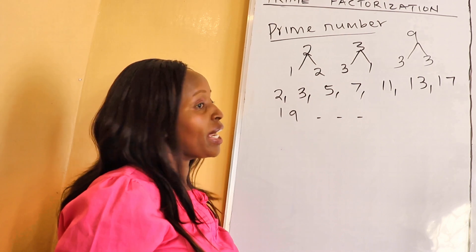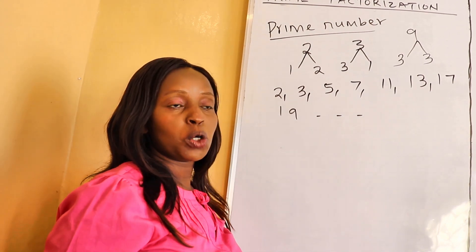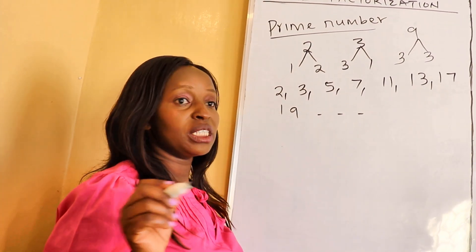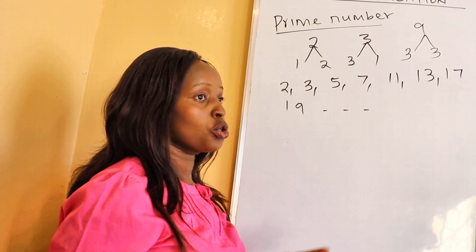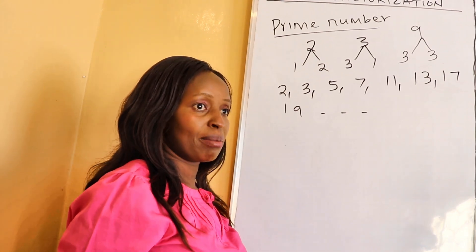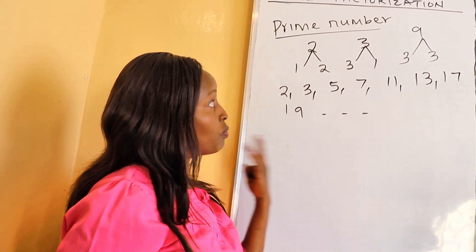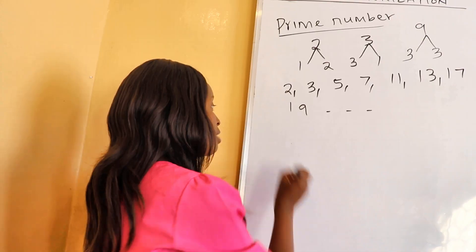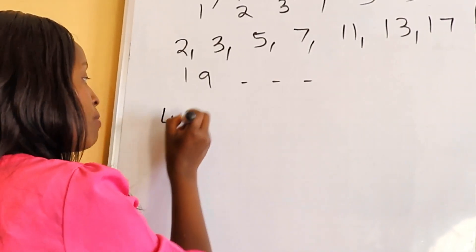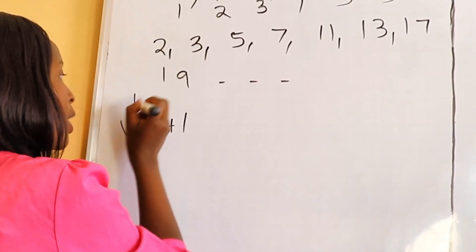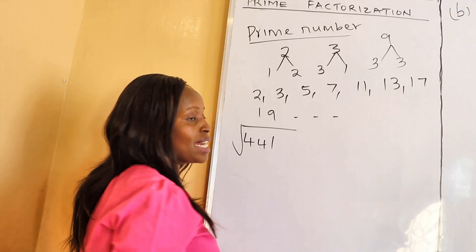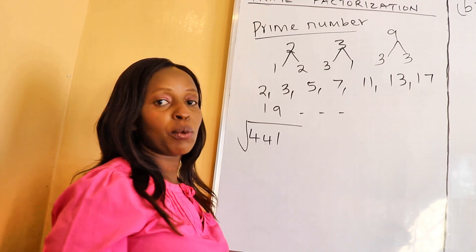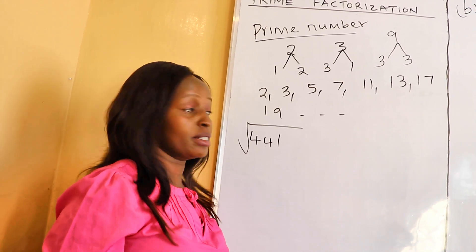When getting the square root of numbers using prime factorization, you need to understand prime numbers, because we are going to use them. For instance, given the number 441, find the square root of 441. We use factor trees.